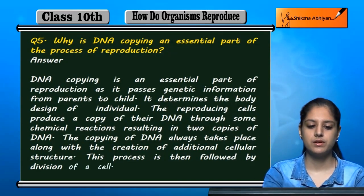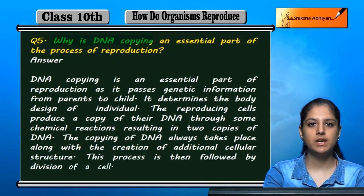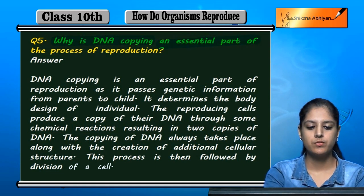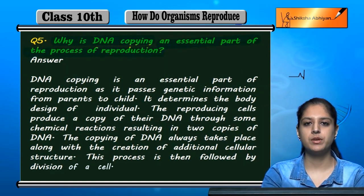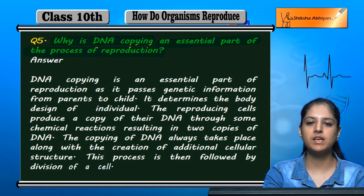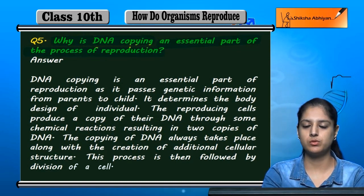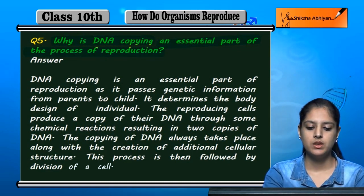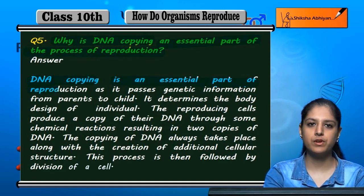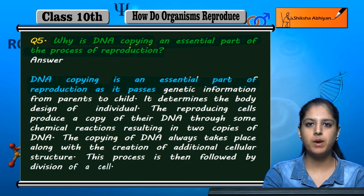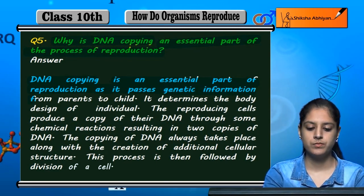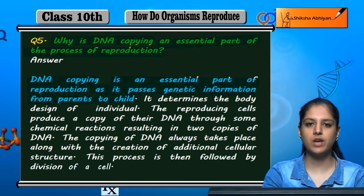Question number 5: Why is DNA copying an essential part of the process of reproduction? DNA copying is an essential part of reproduction as it passes genetic information from parents to child.